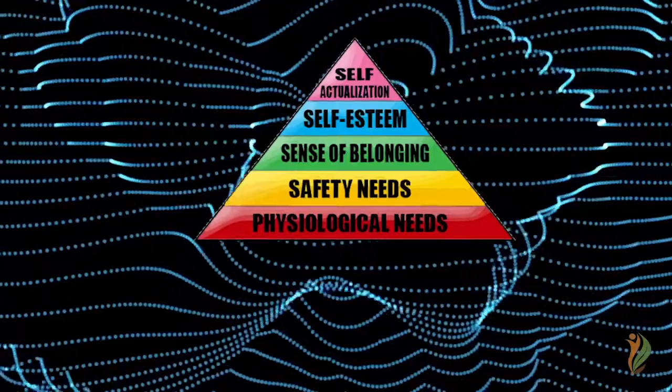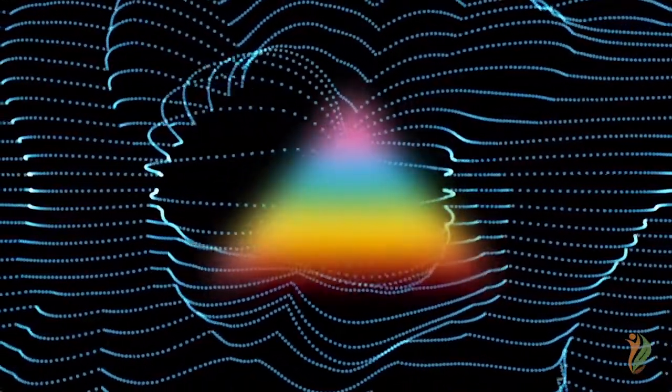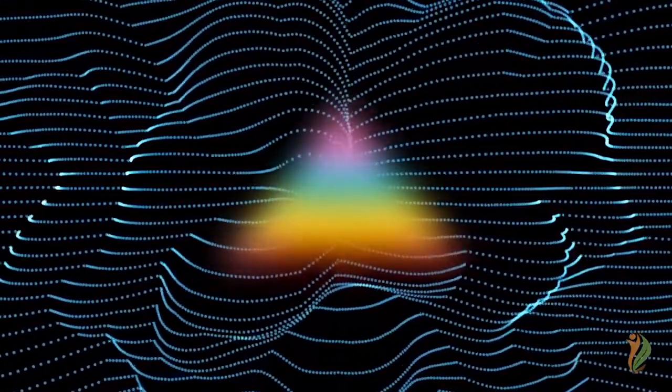Once drugs and alcohol are introduced into this pyramid at the base, the other higher levels begin to become less and less of a priority because all the focus of the brain is beginning to become more and more centered on the addiction itself.